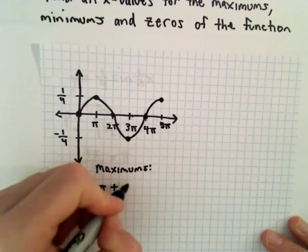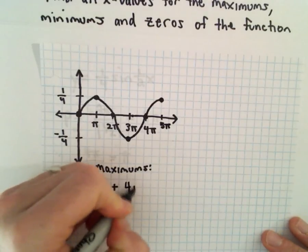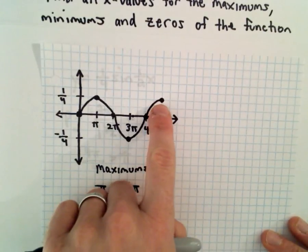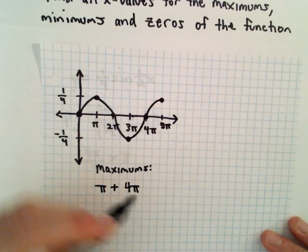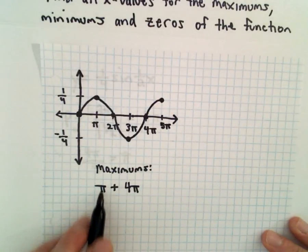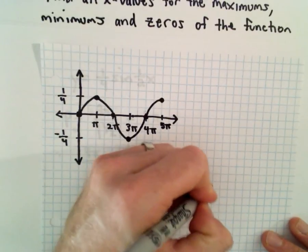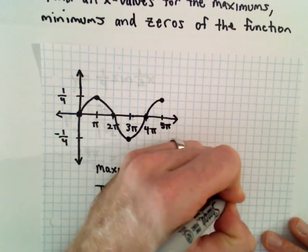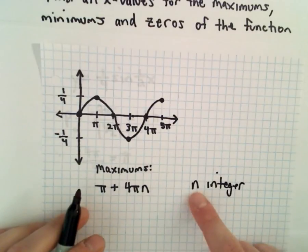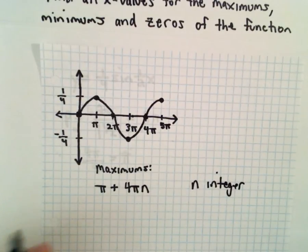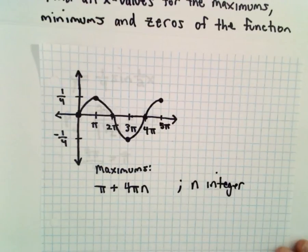So pi is going to be one of the first places we get a maximum. But then if we add multiples of four pi, that'll take me back to a new maximum. So the way we write that is, we take pi plus four pi times n, and n is going to be an integer. Integers are just positive or negative whole numbers, along with zero. So that's going to be where the maximums occur.